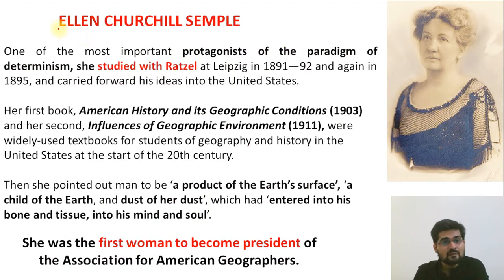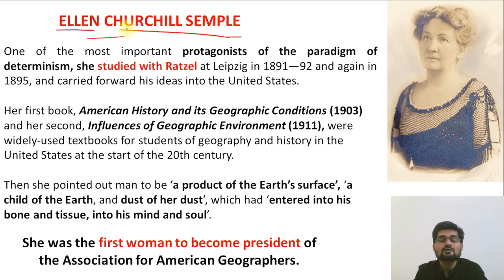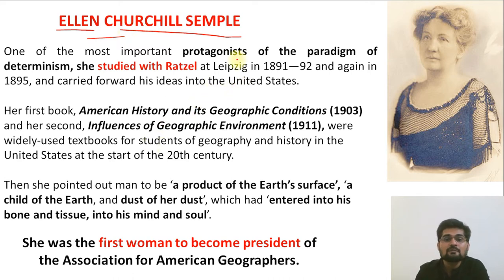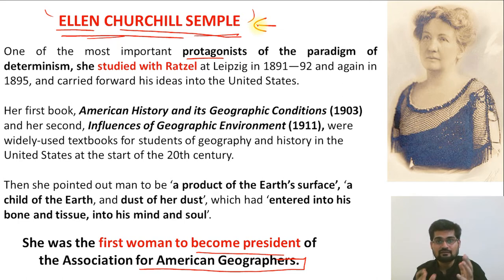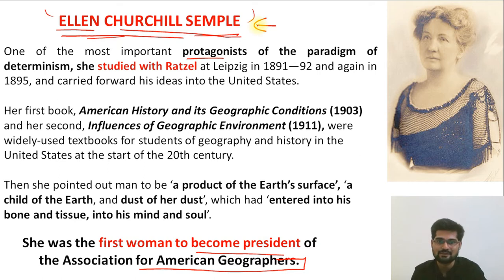A very famous scholar is Ellen Churchill Semple. Unlike the German, French, and British schools of thought where we did not observe many women protagonists, she was one of the first women to become president of the Association of American Geographers — representing the first major women's contribution in the foundations of modern geography within the American school of geographical thought.